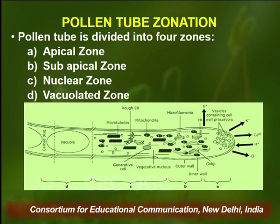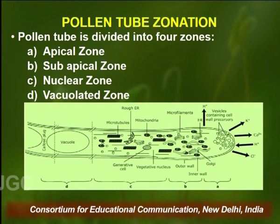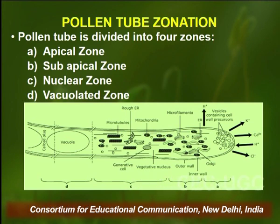This picture shows the different zones present in the pollen tube — four zones in total. The tip is the apical zone, also called the cap block region. Just behind is the sub-apical zone, which harbours all the organelles. Further down is the nuclear zone, which contains the vegetative nucleus and the generative cell (or sperm nuclei if it has divided). The last zone is the vacuolated zone, beyond which the older part of the pollen tube is separated by callosic plugs.